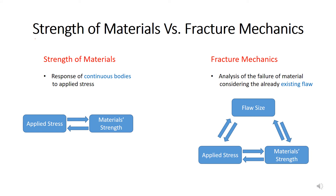Looking at the distinction between strength of materials and fracture mechanics: strength of materials is a core course studied by mechanical and civil engineers, while fracture mechanics is generally studied at the masters level. The basic distinction is that strength of materials considers the response of continuous bodies to applied stress — the key point being a continuous body, which is a body that does not have any crack or flaw. We consider the material to be ideal with no crack or flaw, apply external stress, and calculate the material strength up to failure.